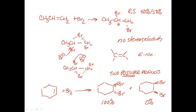Bromination will be an issue in terms of stereoselectivity when done on cyclic alkenes. It won't be an issue for acyclic alkenes — at least not initially.